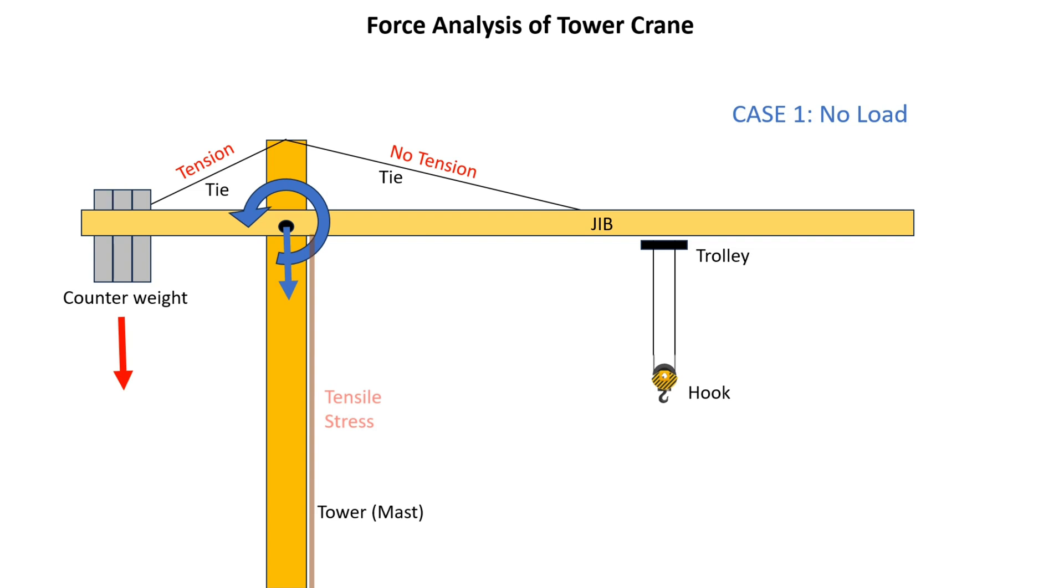This causes direct compressive stress in the tower. In the free body diagram of the tower, there must be a vertical upward force, which is the reaction force from the ground to the tower.